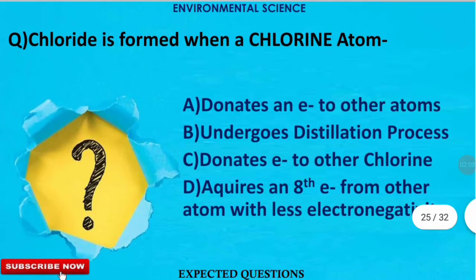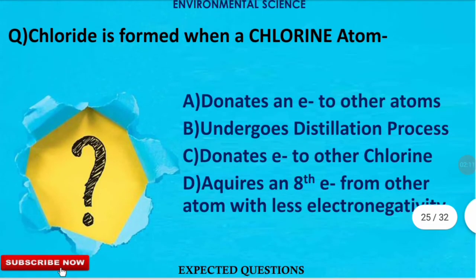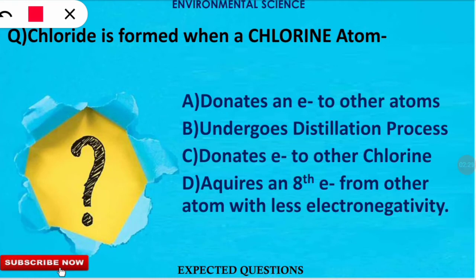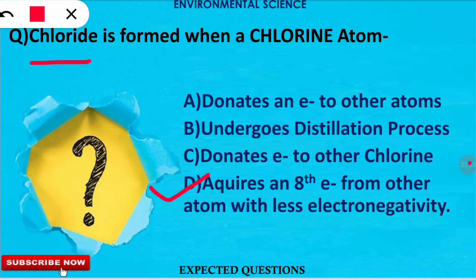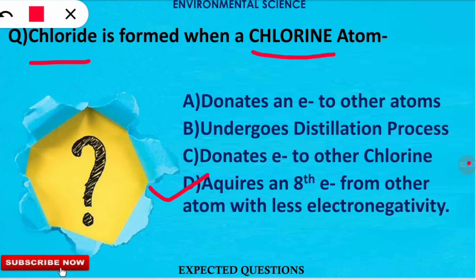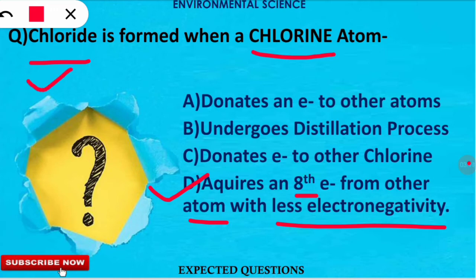The next question is: a chloride ion is formed when a chlorine atom does what? The correct option is option D. Chloride, meaning Cl- ions, are formed when a chlorine atom acquires an eighth electron from another atom with less electronegativity, completing its octet to form the chloride ion.